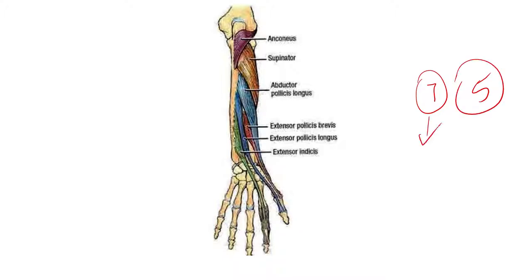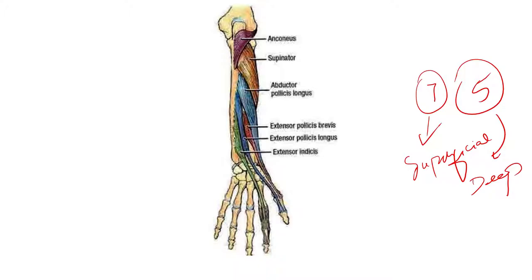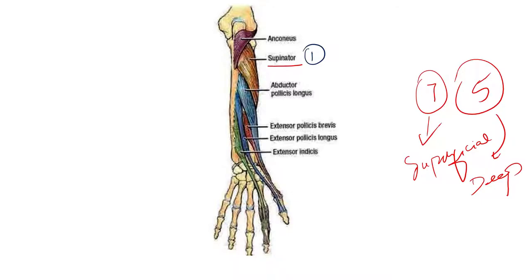As we already know, there are 7 superficial group of muscles and 5 deep muscles. In this video we will study in detail about the attachments, the nerve supply and the blood supply of the 5 deep muscles of the posterior compartment of the forearm. The 5 deep extensors are: Number 1 is the supinator muscle, next is the abductor pollicis longus, extensor pollicis brevis, extensor pollicis longus, and extensor indicis.